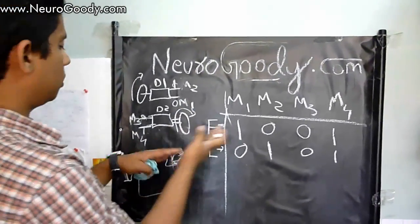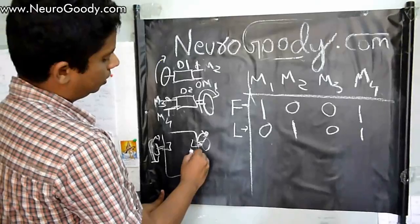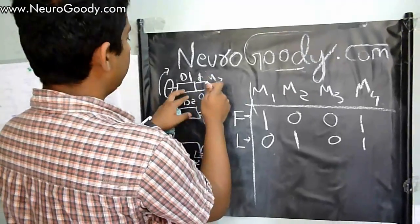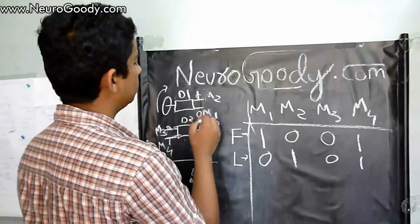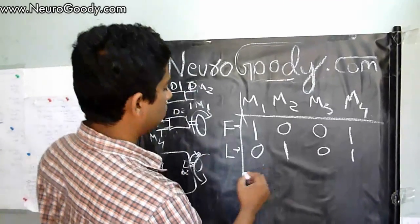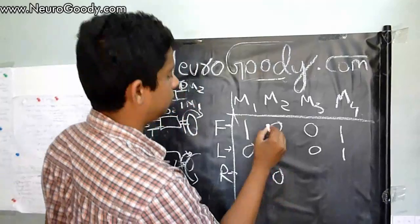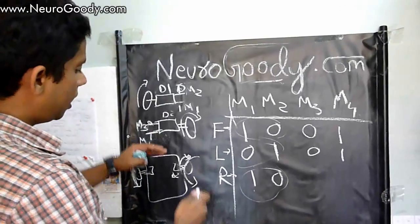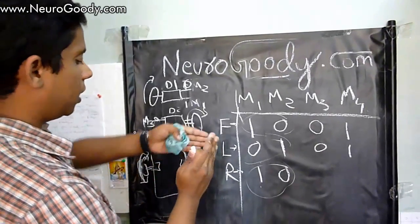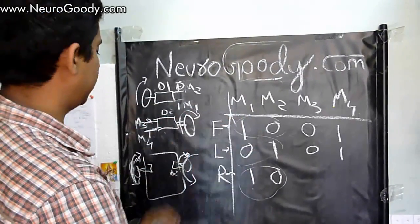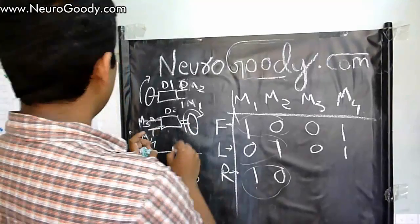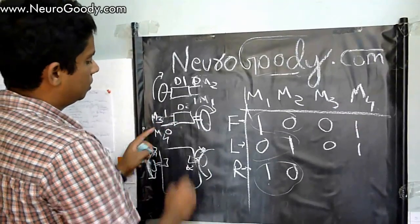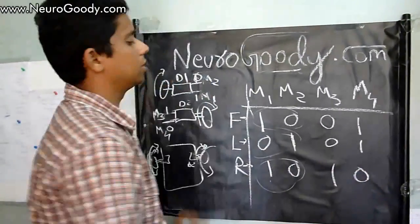To make the robot go to the right, I have to rotate motor D2 to the back side and rotate motor D1 to the front side. D1 forward means M1=1, M2=0. And D2 has to go in reverse, so M3=1, M4=0. That makes the robot turn to the right side.